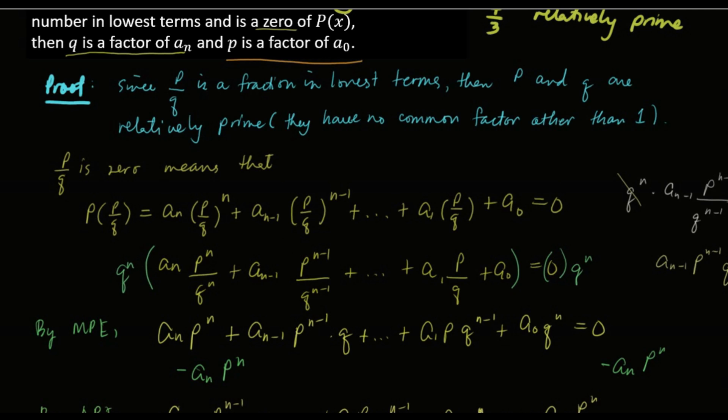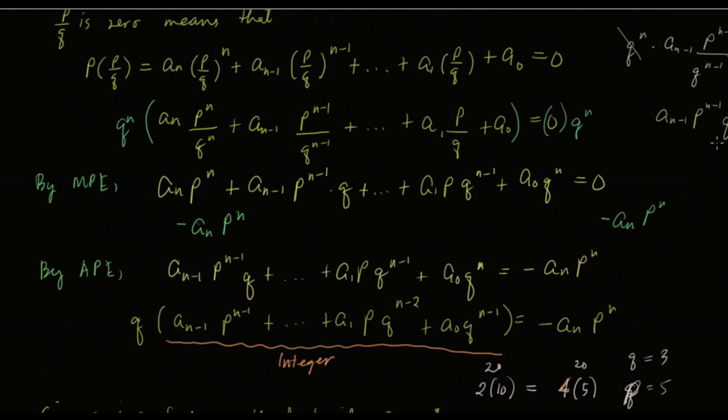And then we have this expression over here. What we did was we transpose this to the other side. Or by addition property of equality, we add negative a sub n p raised to n on both sides of the equation. And then we prove that q is a factor of a sub n.